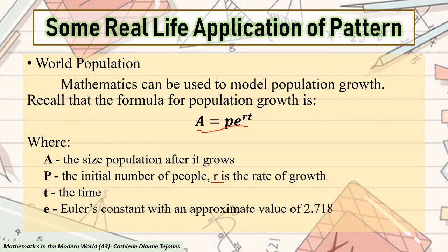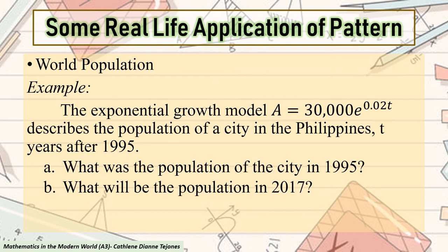And we have also our E, which is the Euler's constant. Remember that this can be read as Euler's constant with an approximate value of 2.718. If you're going to check your calculators, you can see an E for those who have advanced calculator. But for those who don't have, if you're going to solve for the world population, you can use 2.718.